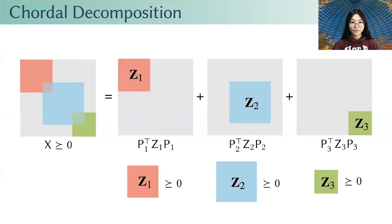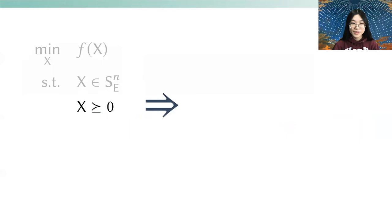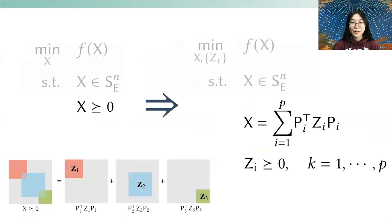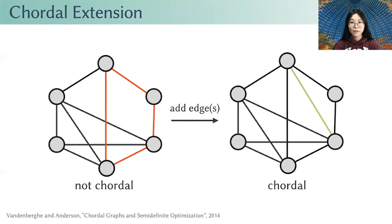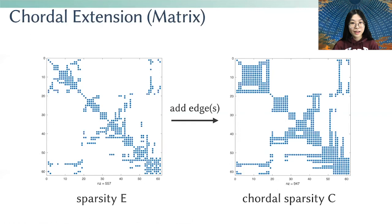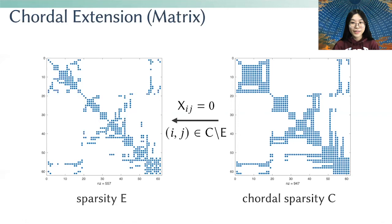Looking at our optimization problem again: using chordal decomposition, we can now decompose our large sparse PSD constraint into several smaller ones, which are cheaper and parallelizable. However, not every graph is a chordal graph, but we can always add new edges to make a non-chordal graph chordal. In terms of the matrix, this is equivalent to adding non-zero entries or degrees of freedom into the original sparsity pattern. We can then add equality constraints to enforce the new degrees of freedom arising from the chordal extension to be zero.